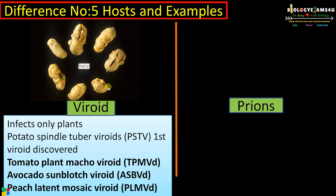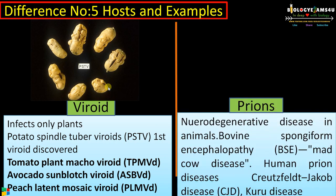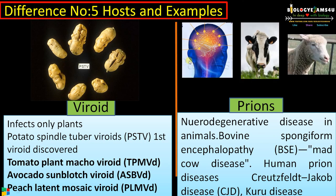Whereas prions cause neurodegenerative diseases in animals. In cattle, it causes bovine spongiform encephalopathy (BSE), called mad cow disease. In sheep, it causes scrapie disease. In humans, it causes neurodegenerative diseases like CJD (Creutzfeldt-Jakob disease) and Kuru disease.